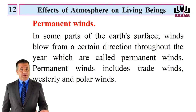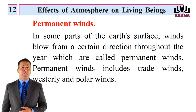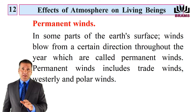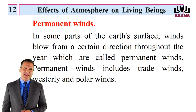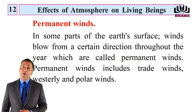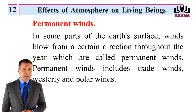Permanent Winds: In some parts of the earth's surface, winds blow from a certain direction throughout the year, which are called permanent winds. Permanent winds include trade winds, westerly and polar winds.